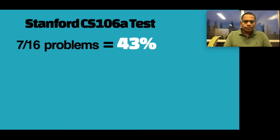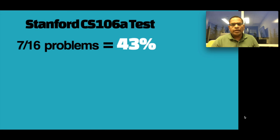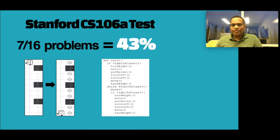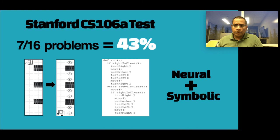We tested the trained network on 16 problems from Stanford's homework and class tests. The network was able to solve 7 of them, including one fairly complicated program it produced from examples. There's still a long way to go, but it was promising. In the longer term, we probably need to go beyond just neural techniques — one idea we're pursuing is combining neural search with symbolic methods using constraint solving for more precise reasoning about programs.